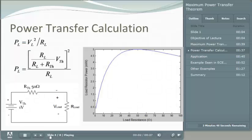In this slide, I have calculated the power through the load resistor when we have a 1-volt source and a Thevenin equivalent resistor of 50 ohms, where I've varied the load resistance between 1 and 100 ohms.